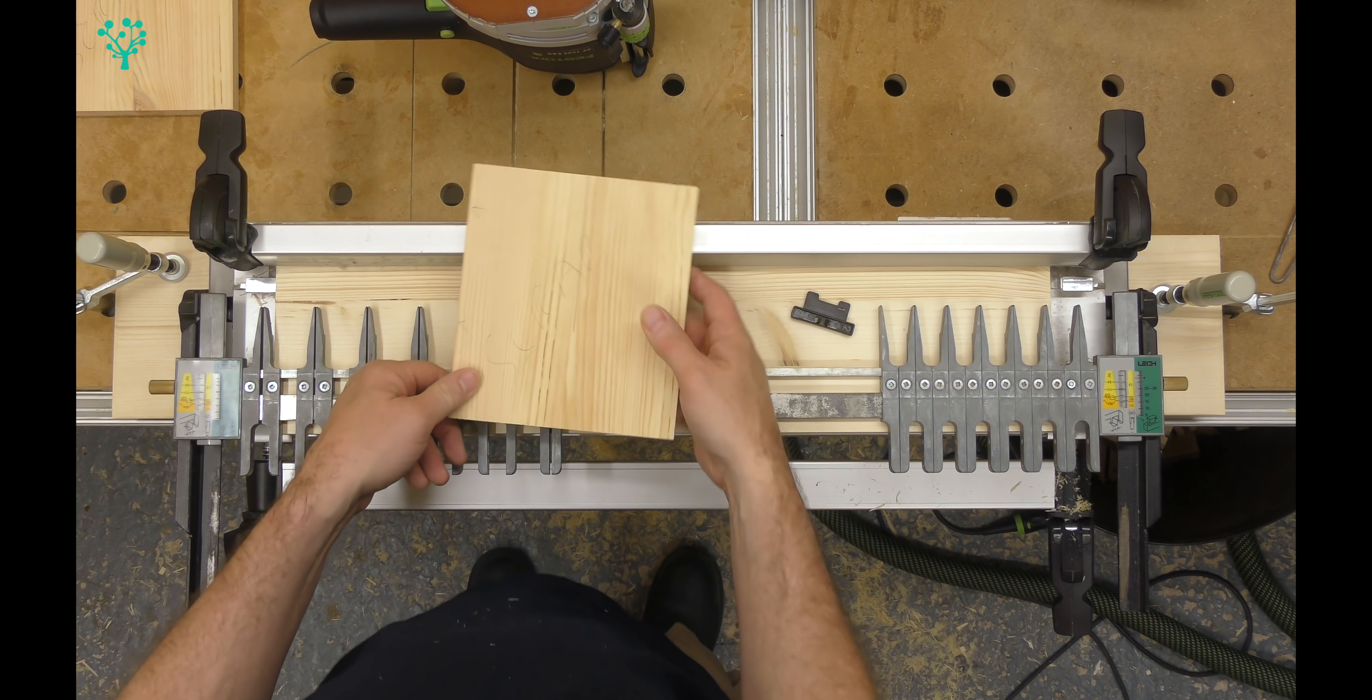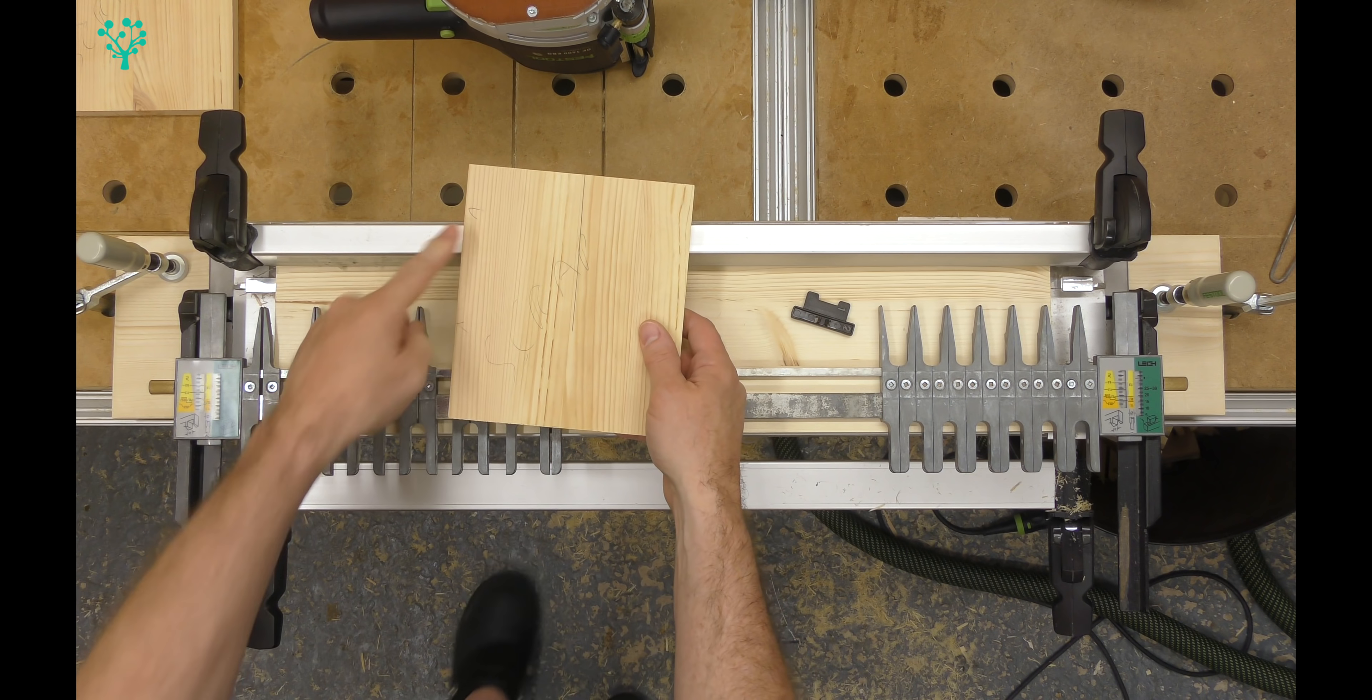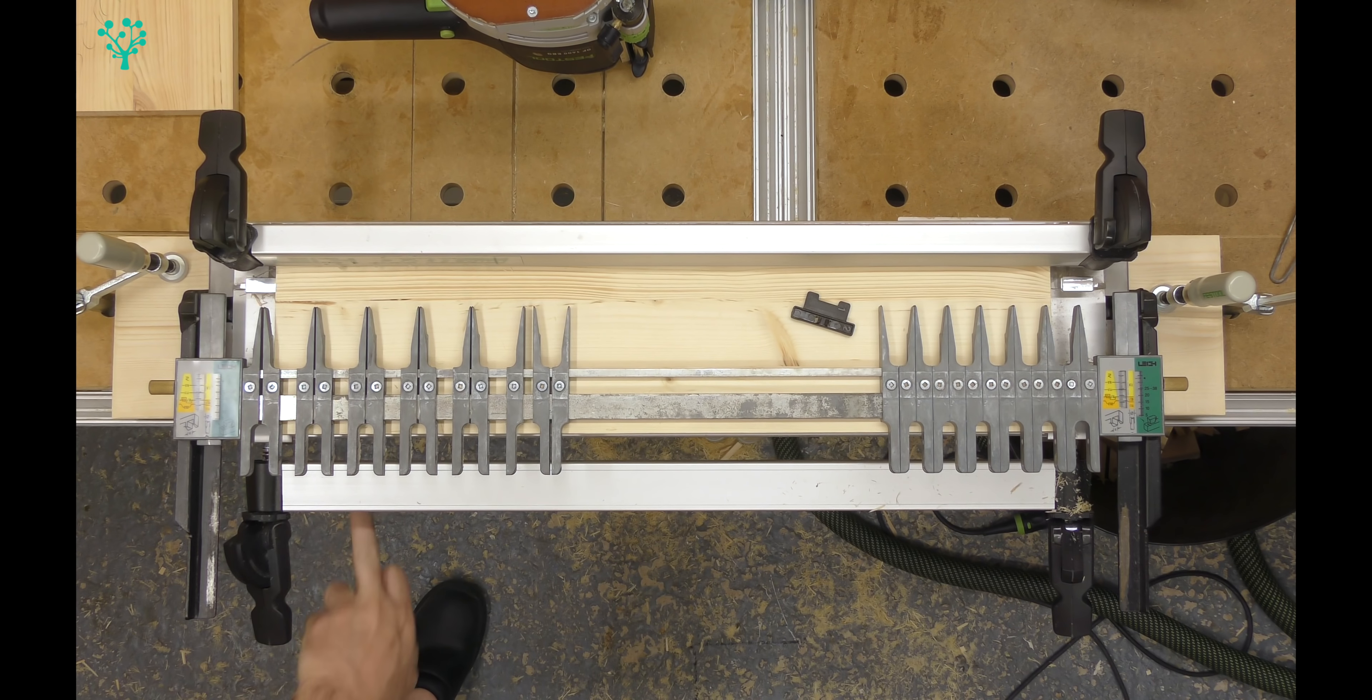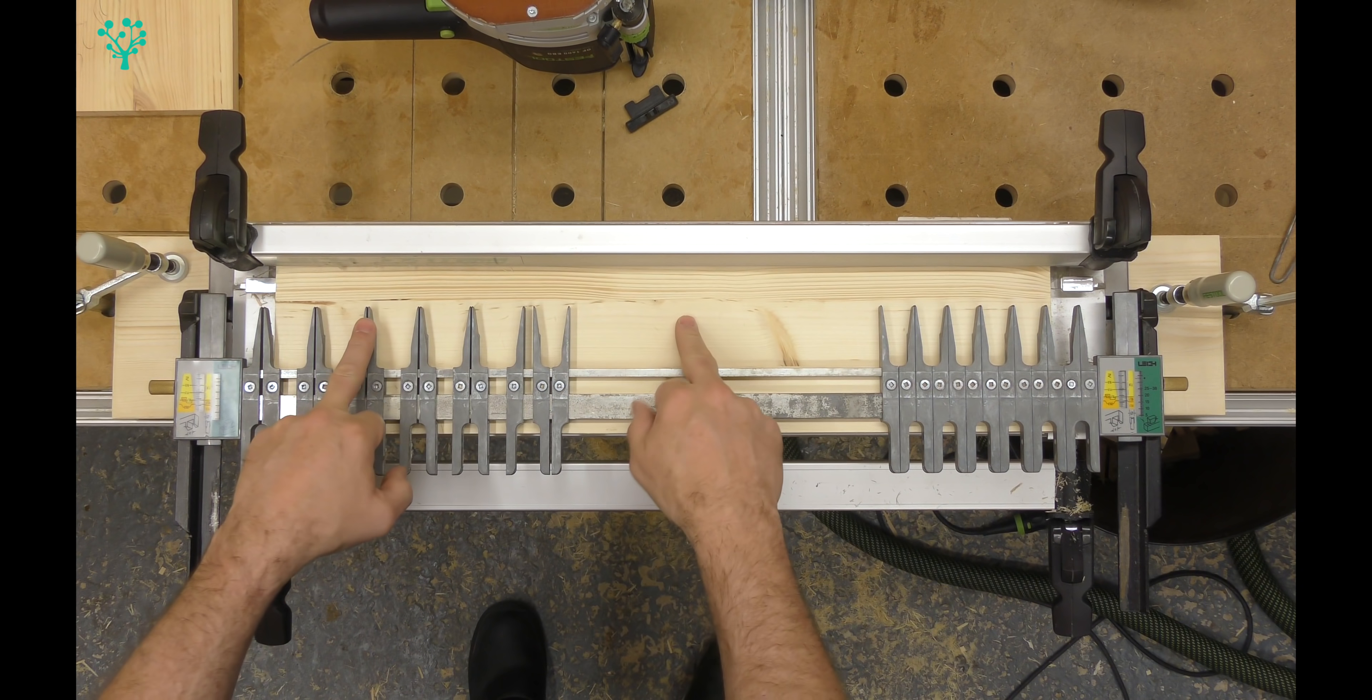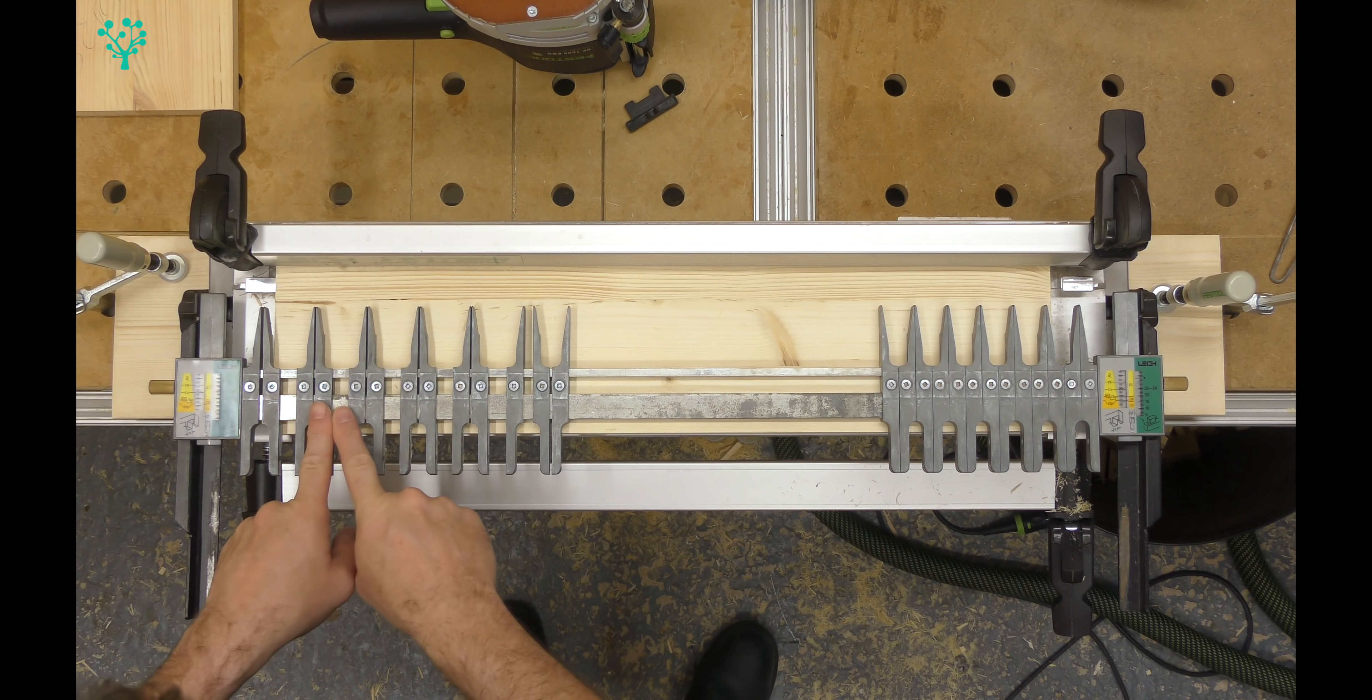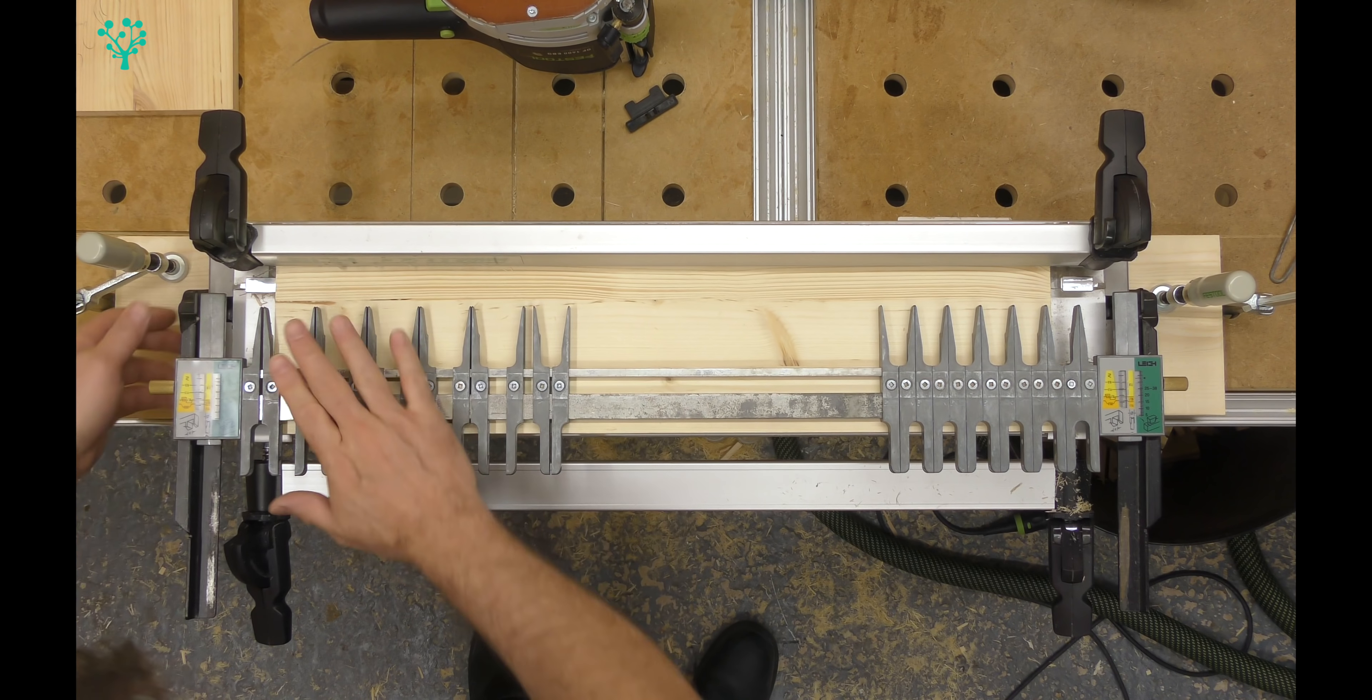I'm now going to take one of our scrap pieces of wood and I'm going to reference the edge here to the two indents on the side of the jig. We've obviously got our backer board in the jig, the fingers are all set to the appropriate spacing, and everything is tightened down.